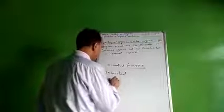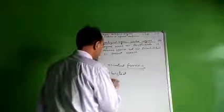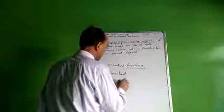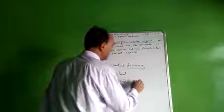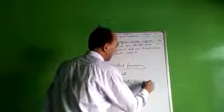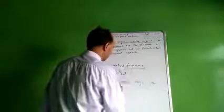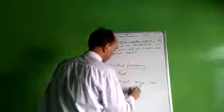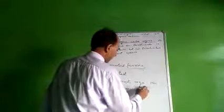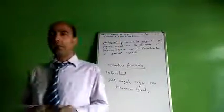There are about one hundred vestigial organs in the human body.